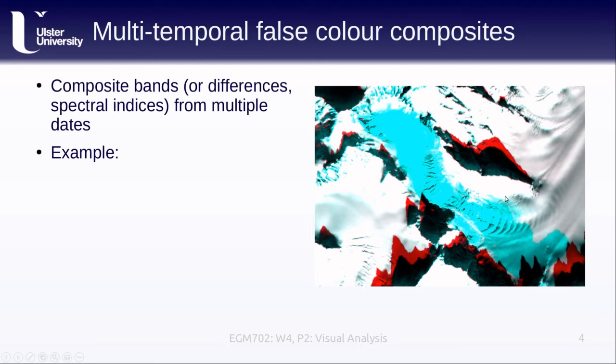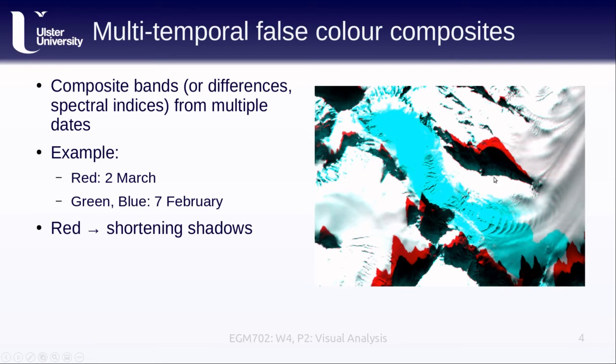So in this example, I've taken an image from March 2nd and set that to the red channel of the image, while the green and blue channels are an image from 7th of February. In this case, red pixels correspond to shortening shadows. We're getting later in the year, and so the shadow cast by the mountain is getting shorter, and as a result, the area that used to be in shadow appears much brighter in the March image than it did in the February image.